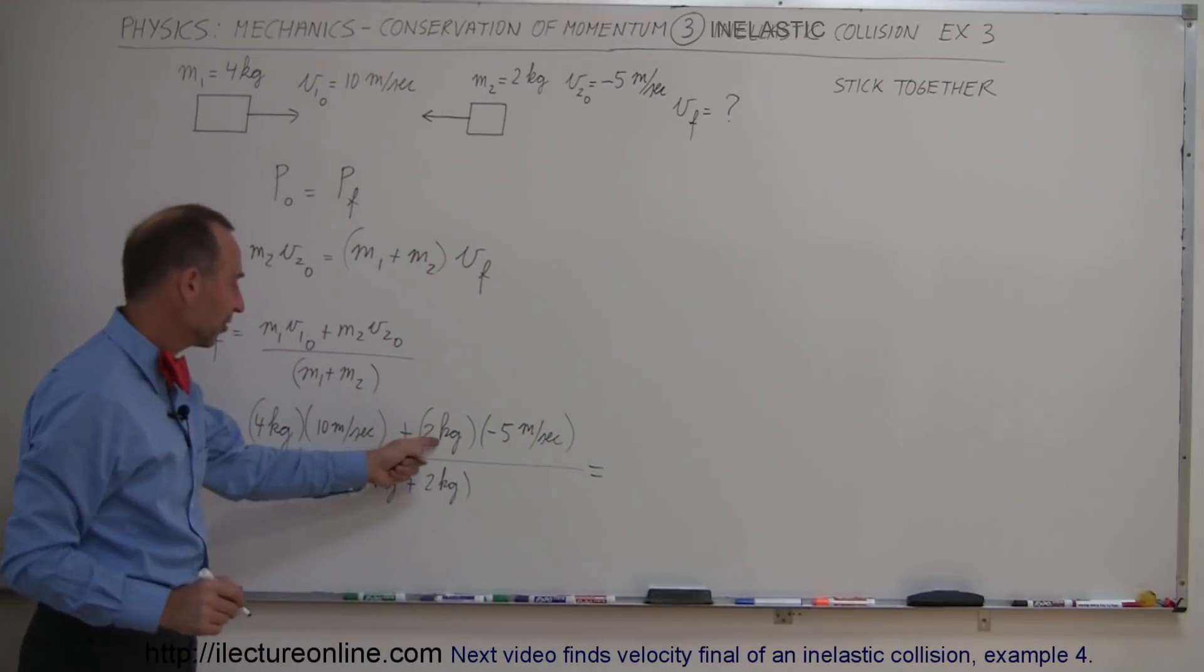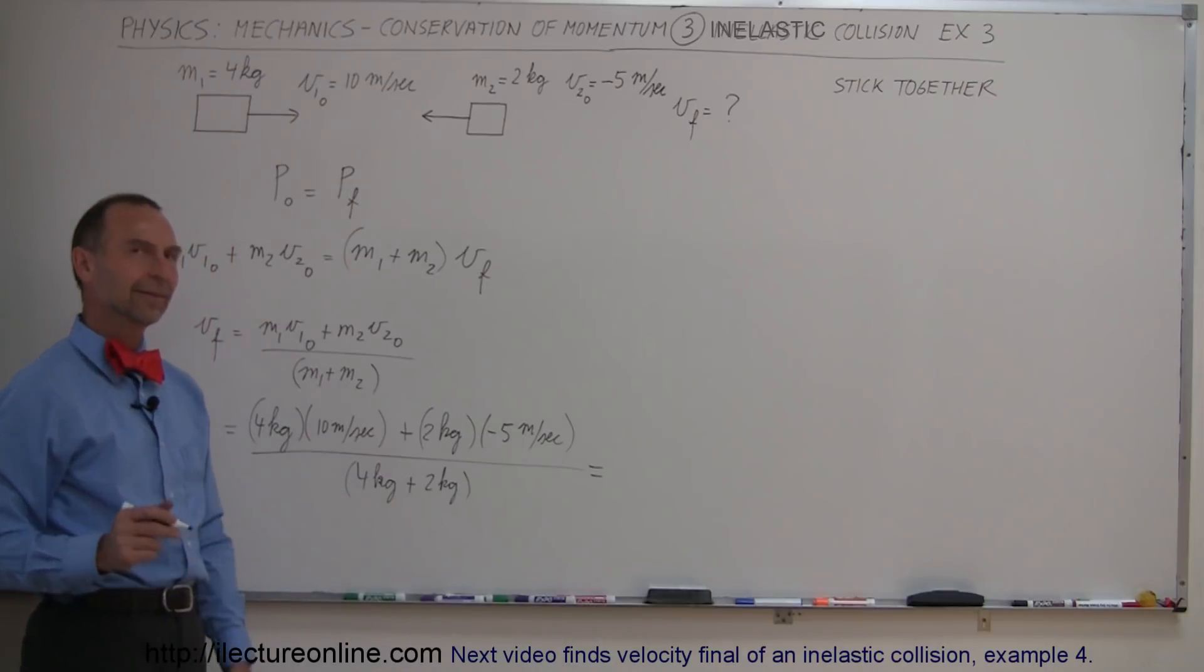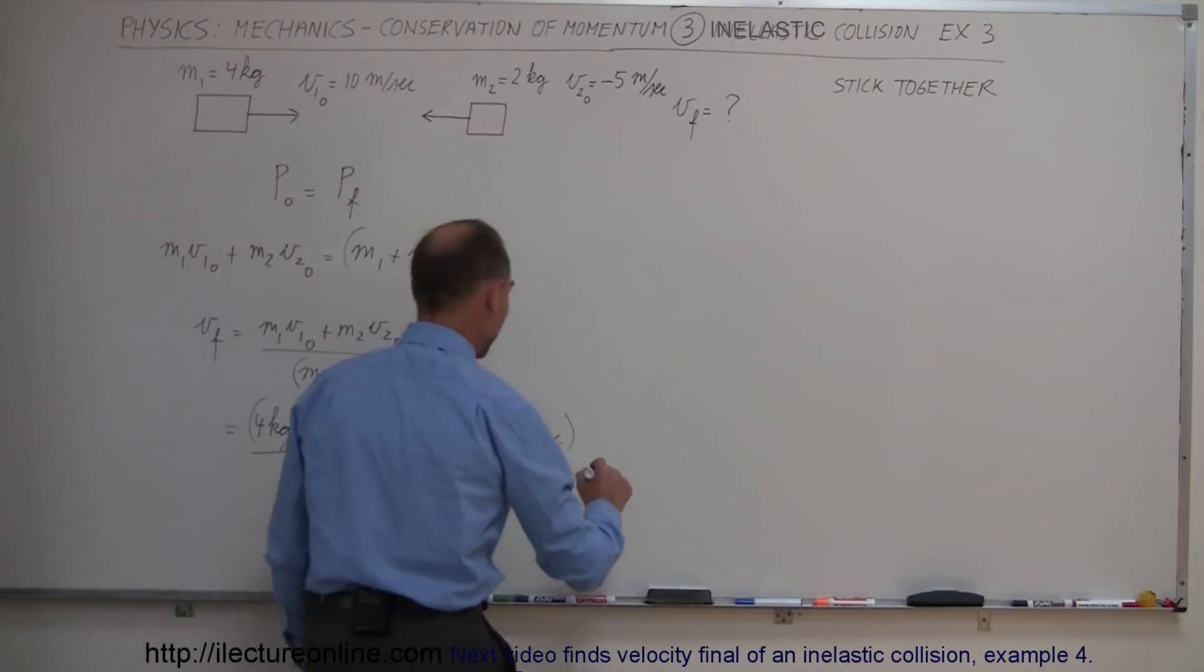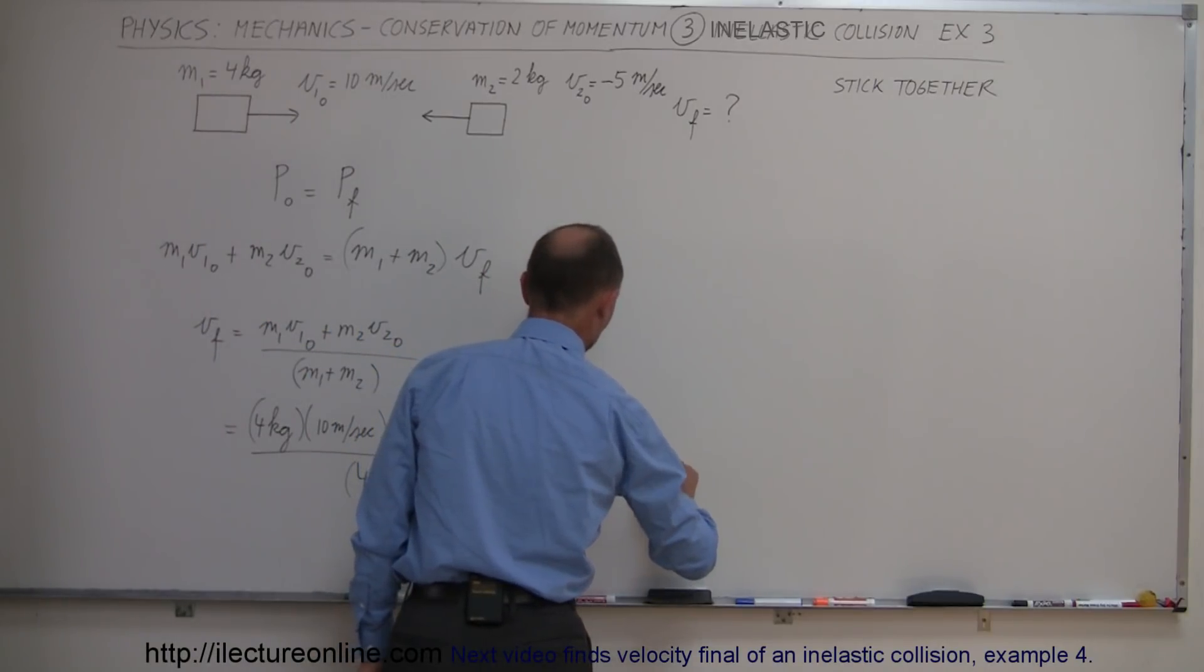Okay, so this is 40 minus 10, that's 30, divided by 6. 30 divided by 6 is 5, so that would be 5 meters per second, still in a positive direction.